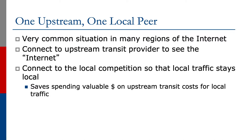We're going to look at the first example, which is how we connect to one upstream provider and one local peer. It's a very common situation in many regions of the internet. We connect to the upstream provider to see the whole internet, and we connect to the local competition so that the local traffic will stay local. This means we save valuable finances on upstream transit costs for local traffic.